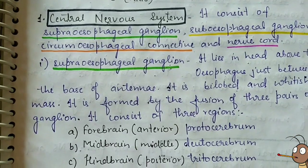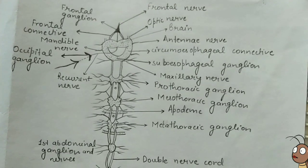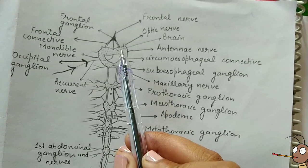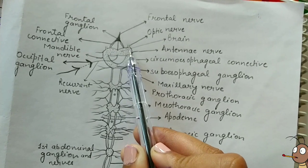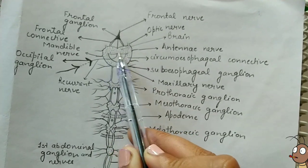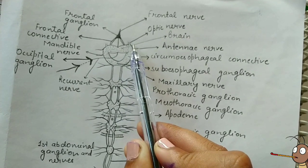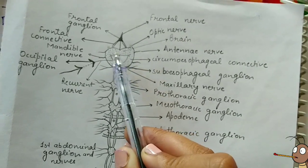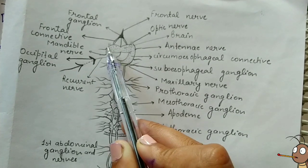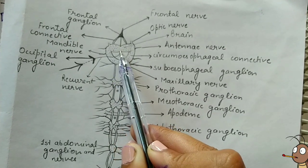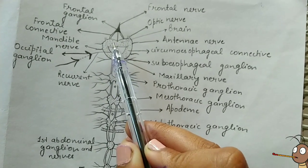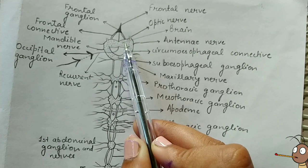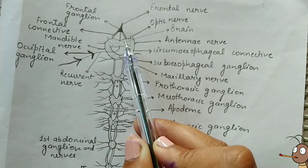We can understand this through the diagram. Here we see the diagram of the nervous system of cockroach. This region constitutes the supraesophageal ganglion, which lies above the esophagus between the base of the antennae. This structure is bi-lobed — this is one lobe and this is the other lobe. It is a whitish mass created by the fusion of three ganglia.